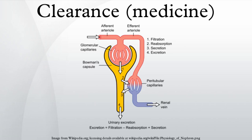Each substance has a specific clearance that depends on its filtration characteristics. Clearance is a function of glomerular filtration, secretion from the peritubular capillaries to the nephron, and reabsorption from the nephron back to the peritubular capillaries. Clearance is variable in zero-order kinetics because a constant fraction of the drug is eliminated per unit time, but it is constant in first-order kinetics because the amount of drug eliminated per unit time changes with the concentration of drug in the blood.